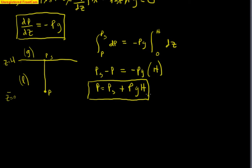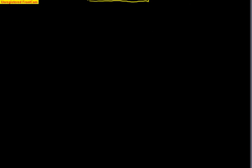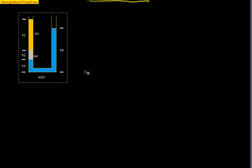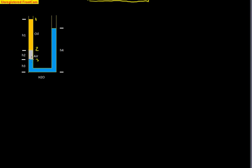Manometer problems are pretty easy. Let's set one up. We have oil, then an air bubble trapped between the oil and water, and we label points: point 1, point 2, point 3. Due to hydrostatic equilibrium the pressure at a horizontal level in a connected static fluid is equal on both sides, so we draw that line and call those points 4 and 5.